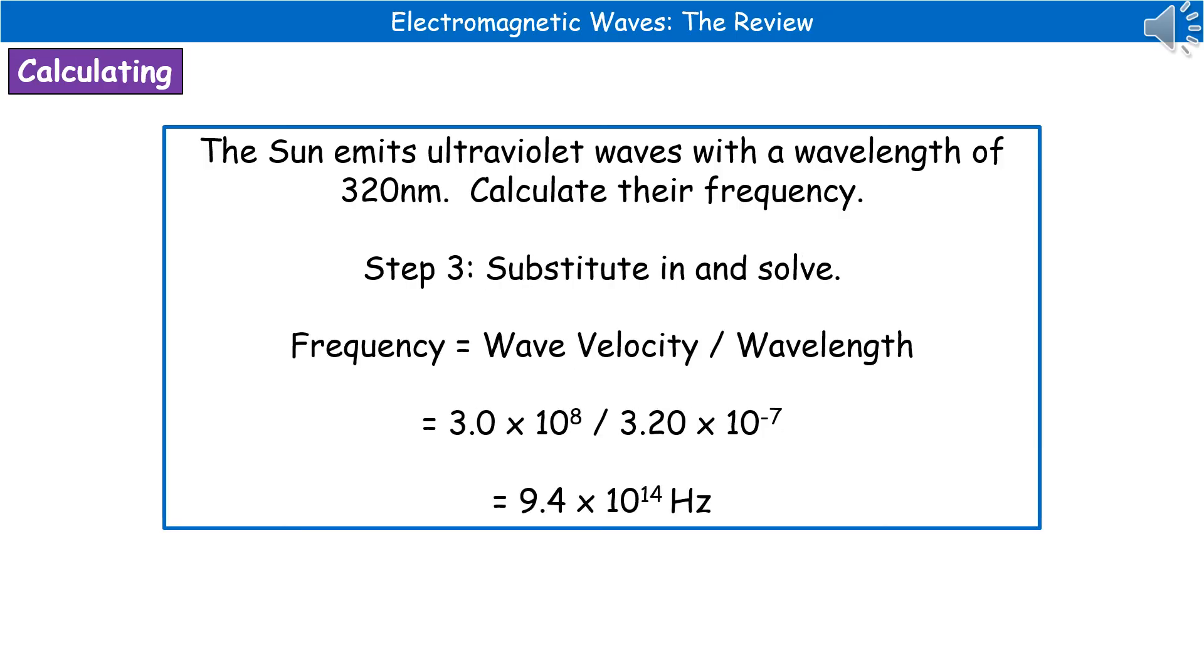Which then just leaves us with our last bit, which is to substitute into our equation and to solve it. So because we're calculating the frequency, obviously we need to rearrange it first of all. So that will give us wave velocity divided by wavelength. Substituting our values that we have worked out or we know. So 3.0 times 10 to the power of 8 divided by 3.20 times 10 to the power minus 7 gives us our answer of 9.4 times 10 to the power of 14. And remember, because we've worked out a frequency, that has the unit hertz, which is our capital H, lower case z.